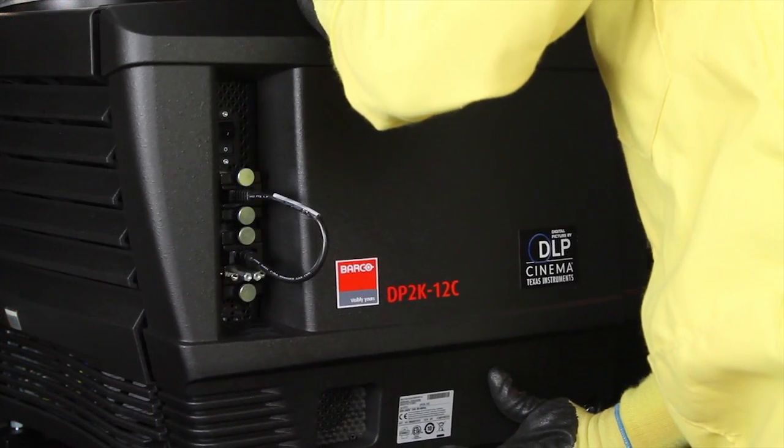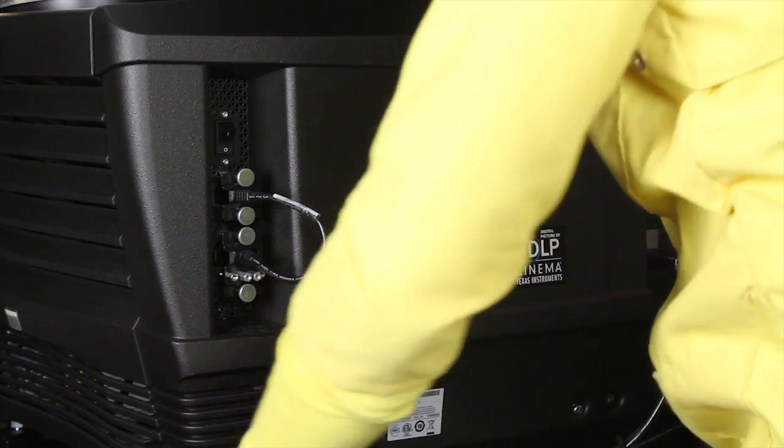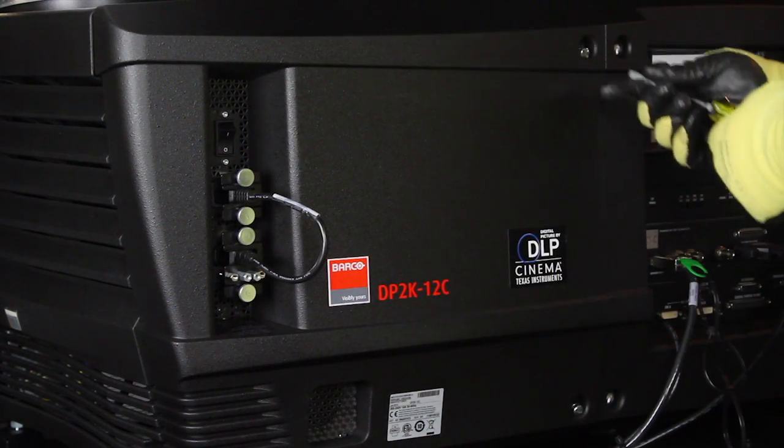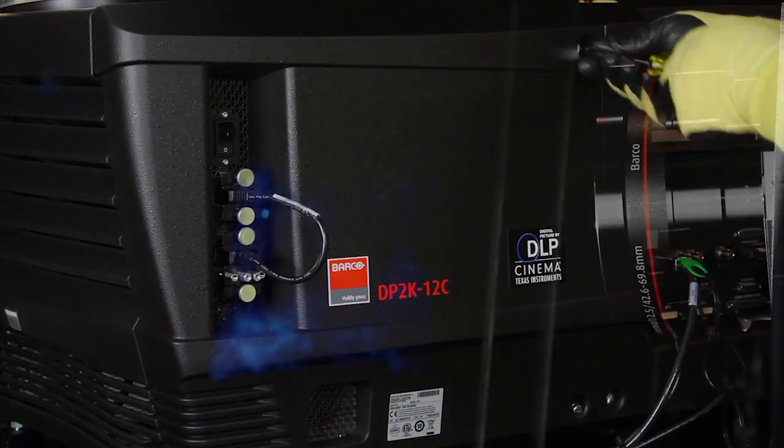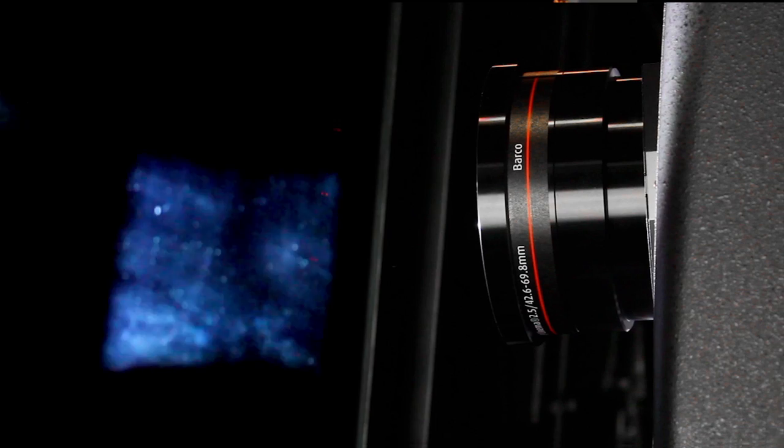Once the lamp is properly aligned, replace the side door and tighten the two captive screws. Installation is complete. Now, it's showtime.